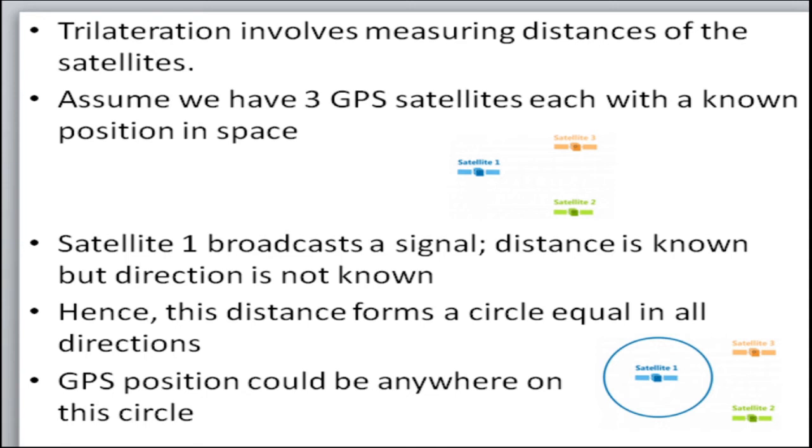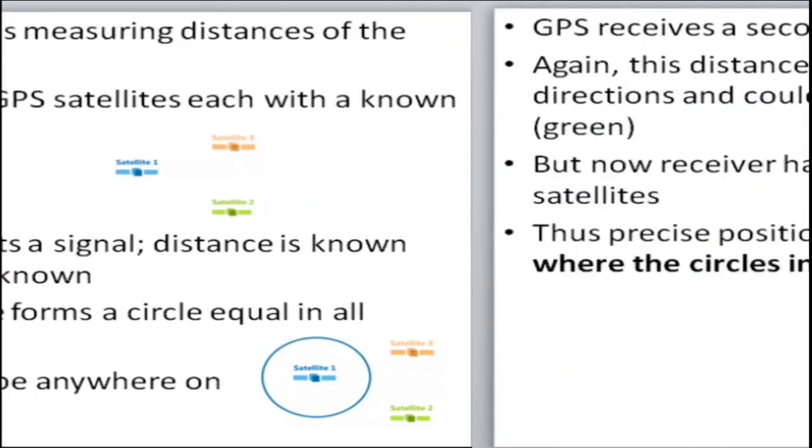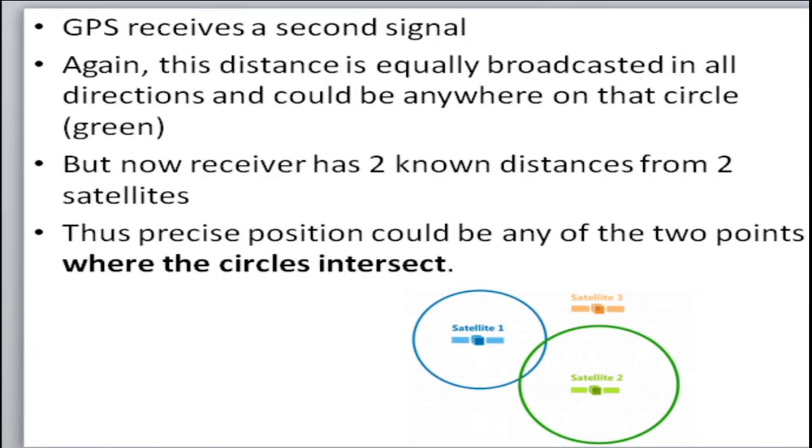We still don't know exactly where on this. Similarly when we go for the second satellite in the same reference another distance is obtained and now the object can be anywhere in the green circumference. So using the previous and the current circumference we can get two common points of intersection and this means that the position of the object can be either on these two points.